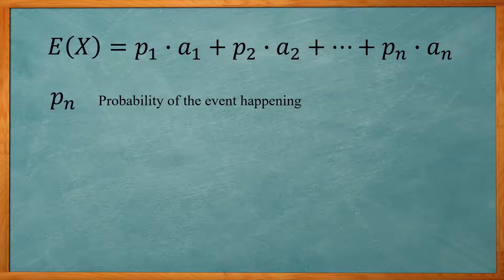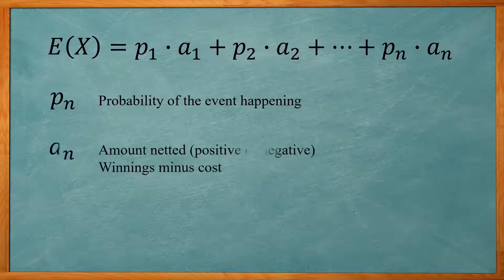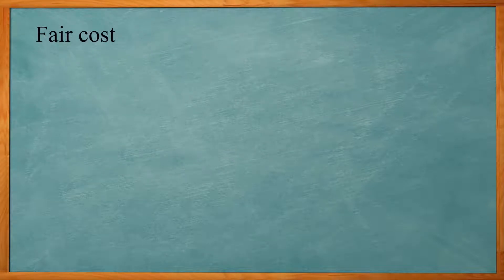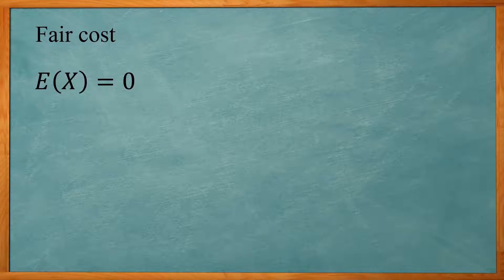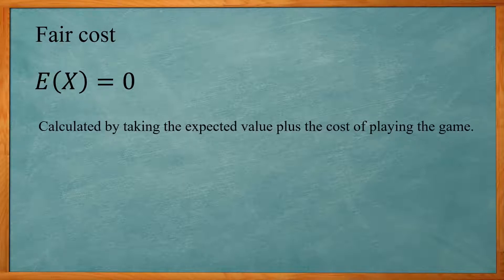Our P value is going to be the probability of that event happening. When we're dealing with expected value, we have various outcomes with this game or whatever you're dealing with. A is the amount netted, positive or negative — calculated by taking your winnings minus your costs. Fair cost is when your expected value is zero, and it can be calculated by taking the expected value plus the cost of playing the game.